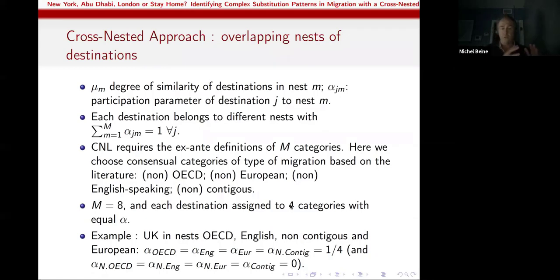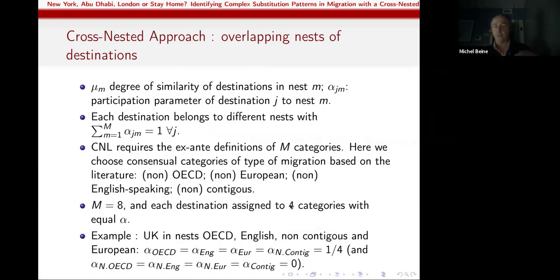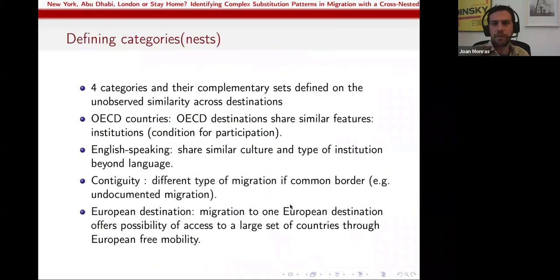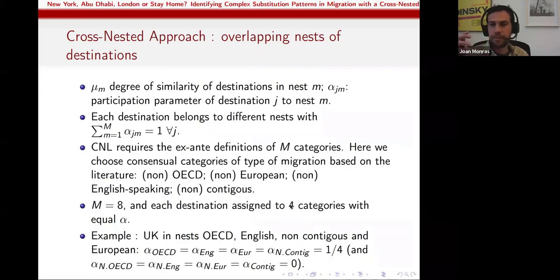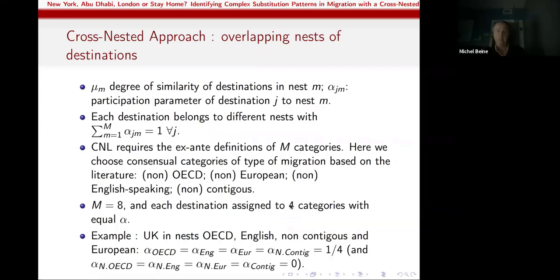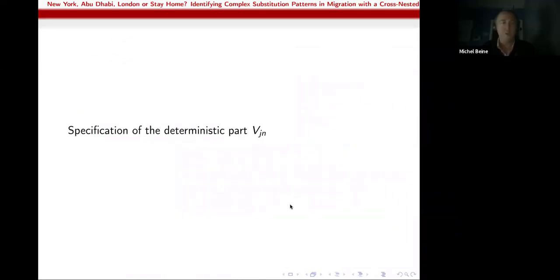A follow-up clarifying question asks whether the model comparison adjusts for the number of parameters — and yes, they use a maximum likelihood ratio test, which accounts for the additional parameters.